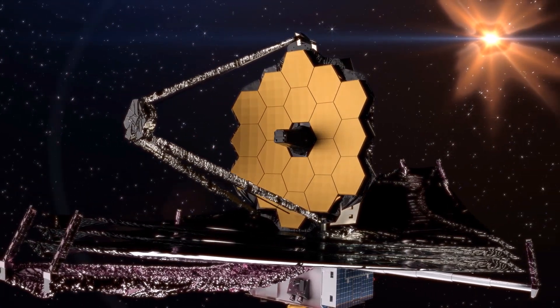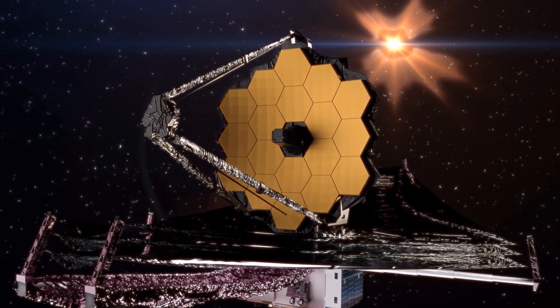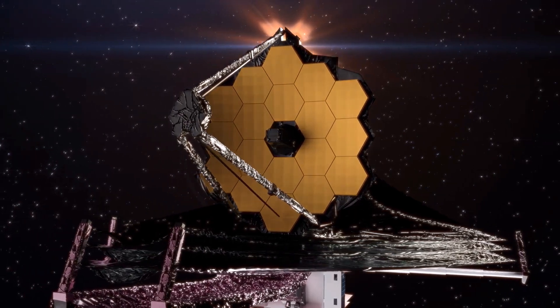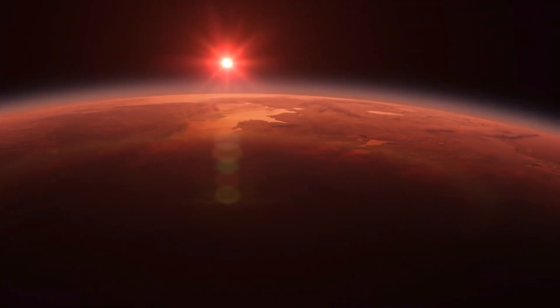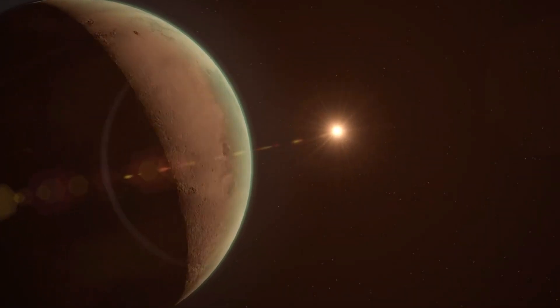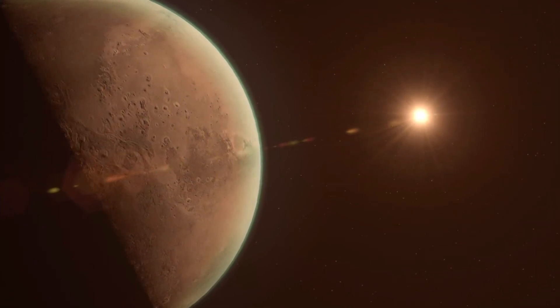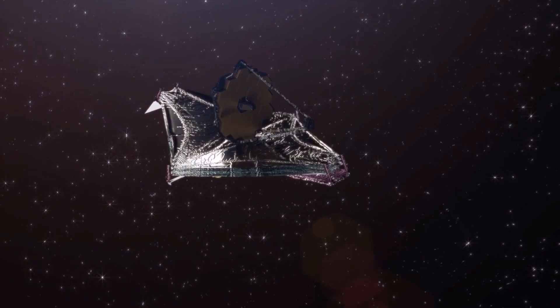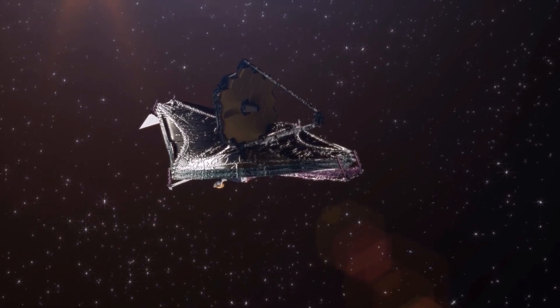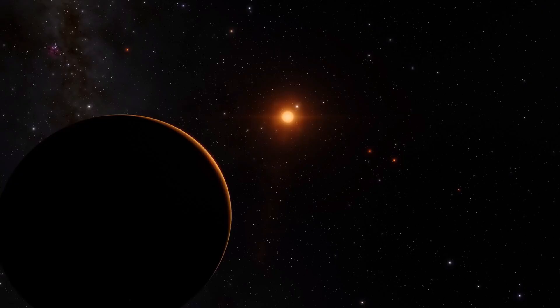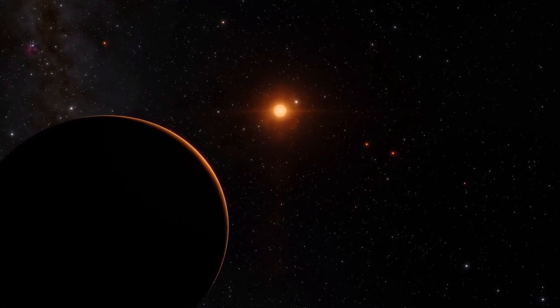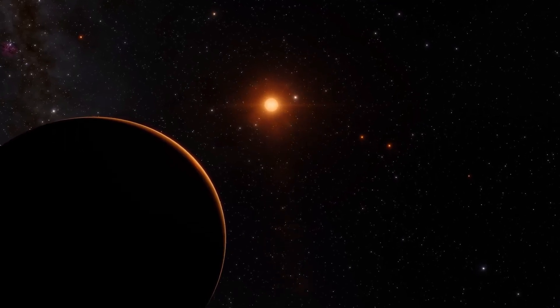Webb's 6.5-meter mirror, an intricate mosaic of 18 hexagonal gold-coated segments, was built to catch those whispers, collecting light that has been traveling not just years, but centuries, millennia, even billions of years. Where Hubble saw the universe mostly in visible and ultraviolet light, Webb peers into the infrared, detecting heat radiation invisible to human eyes, but perfect for slipping past cosmic dust and revealing what would otherwise be hidden.